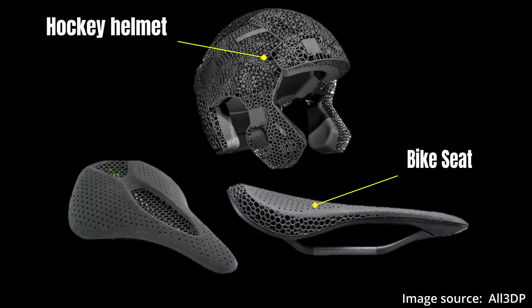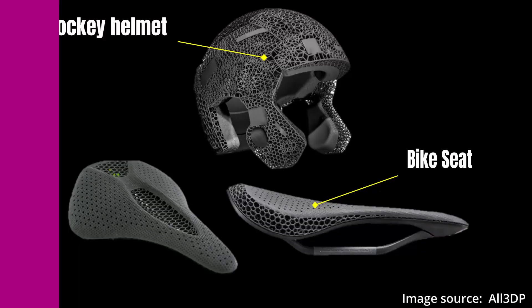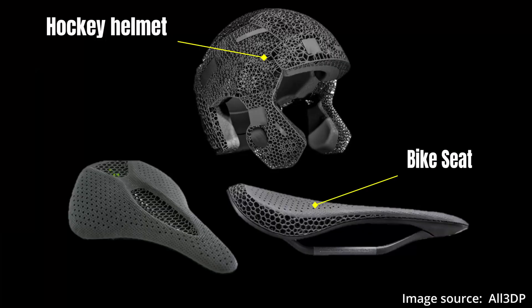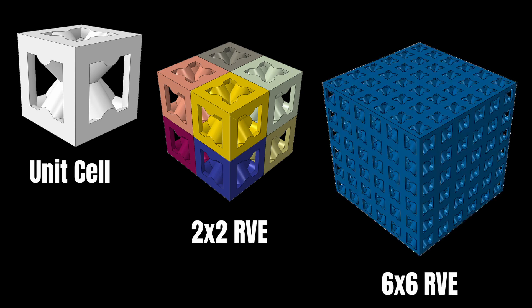If you have clicked on this video, I guess maybe you're curious about how to create lattice cell structures where the unit cell is a combination of a simple cubic with a body-centered structure. If that is true, then welcome — here is the right video for you. I'm going to show you how to create this sort of unit cell and the representative volume element for this type of lattice cell structure. Let's sit back and relax as we get started with this modeling.